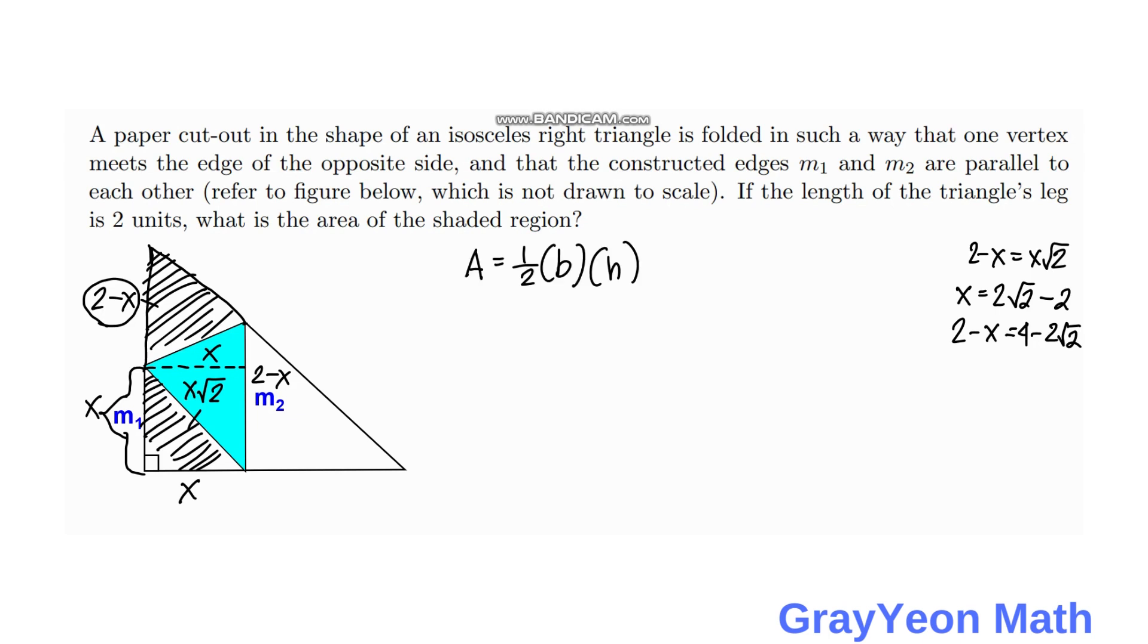Okay, so to find the area of the triangle or the shaded region, we have area is equal to 1/2 times base times the height. In this case, the base is actually 2 minus x, which is 4 minus 2√2. And the height, which is x, that will be equal to 2√2 minus 2.